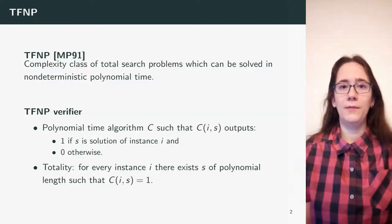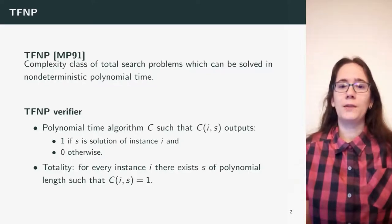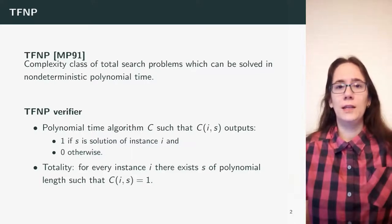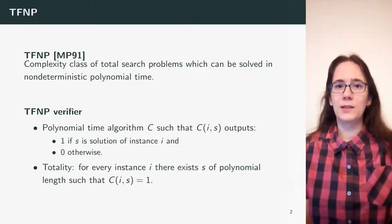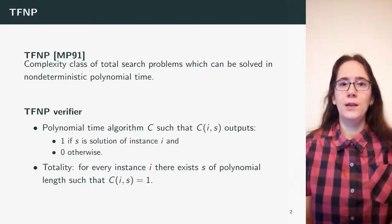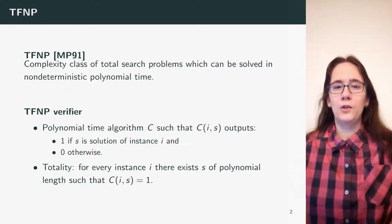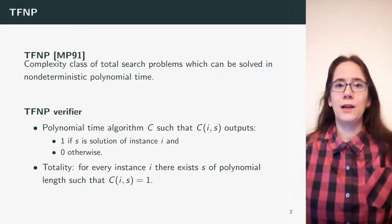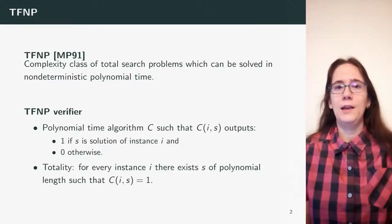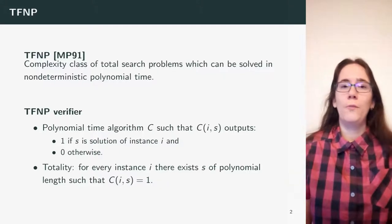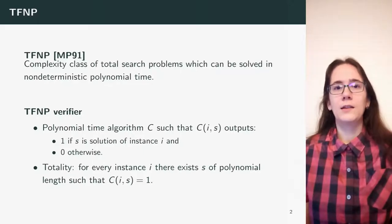We can define a verifier for the TFNP class, similarly as there is a verifier for the NP class. It is a polynomial time algorithm C, such that C, when running on two inputs — string i, which represents the instance, and string s, which represents a possible solution — returns 1 if s is a solution for instance i, and 0 otherwise. In contrast to the NP verifier, it satisfies one more condition called totality: for every instance i, there exists some solution s of polynomial length such that C running on i and s returns 1.